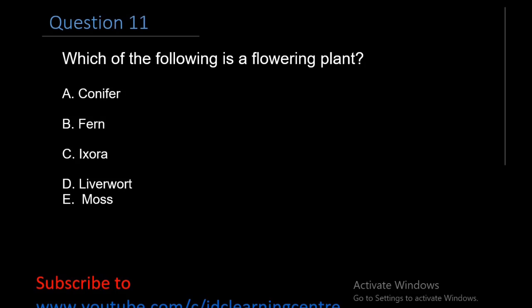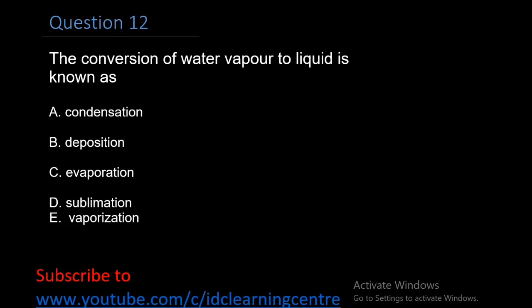Question 11: Which of the following is a flowering plant? Conifer, Fern, Ixora, or Moss? The right answer is C, Ixora. Question 12: The conversion of water vapor to liquid is known as A. Condensation, B. Deposition, C. Evaporation, D. Sublimation, E. Vaporization. The right answer is condensation. Condensation is simply the change of water from its gaseous form like water vapor into liquid form.